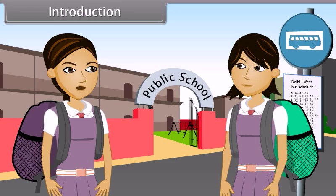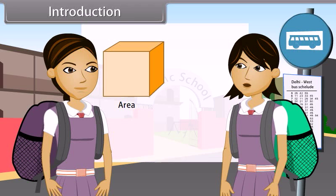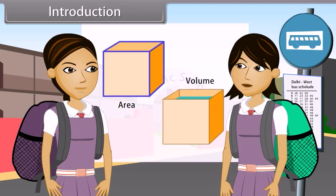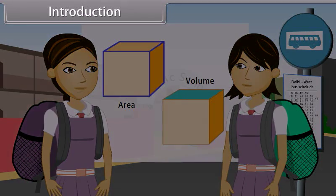I do not understand what you are saying. What is the surface area and the volume? Surface area is exactly what it sounds like — the area of all the outside surfaces of a three-dimensional object. And volume is all of the space inside a three-dimensional object. In this lesson, you will learn more about both of these concepts as well as how to compute the surface area and volume of a combination of solids.